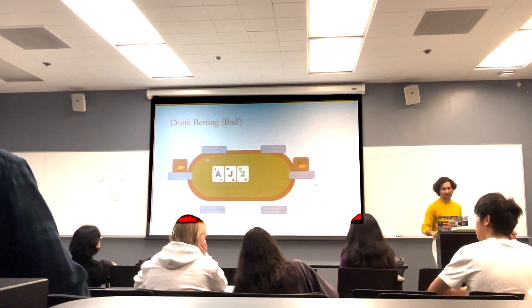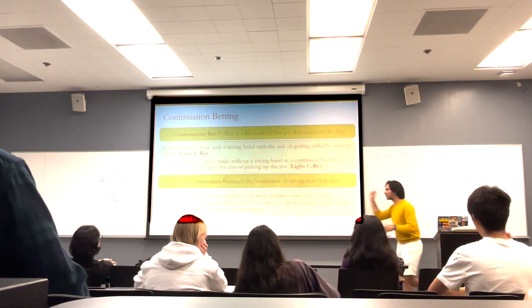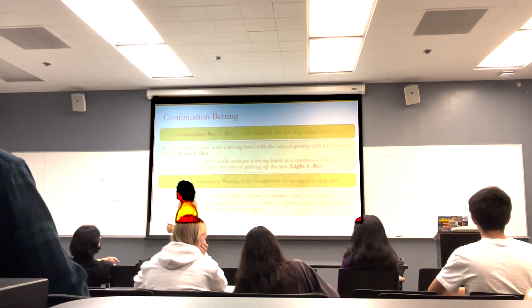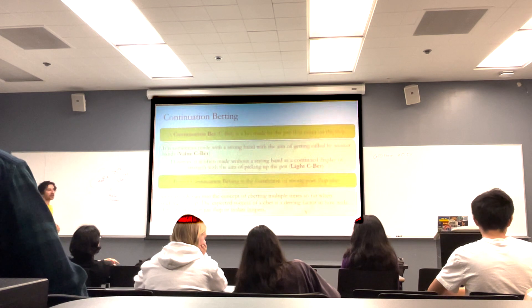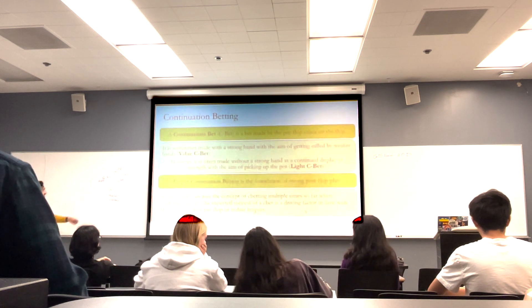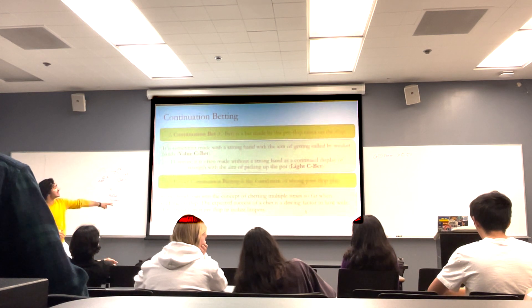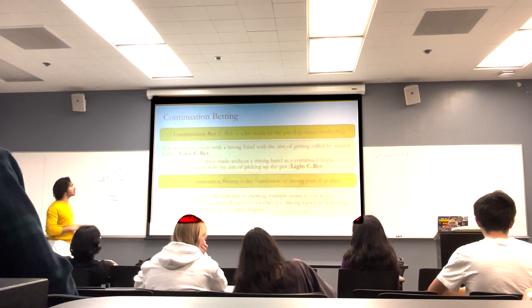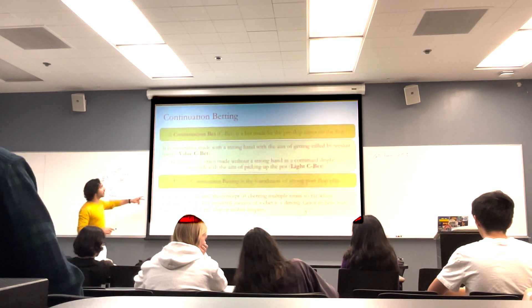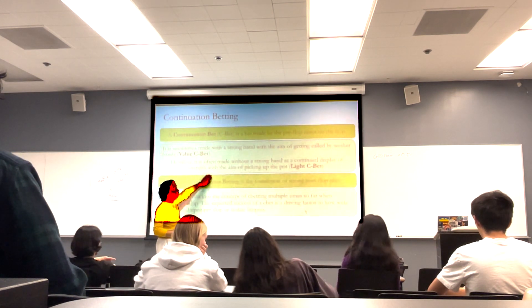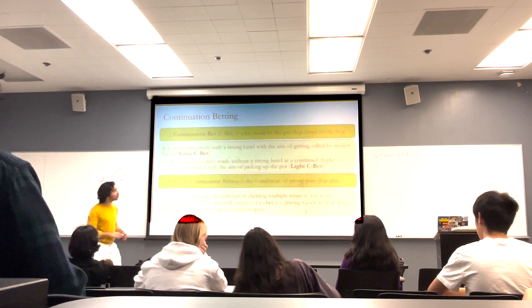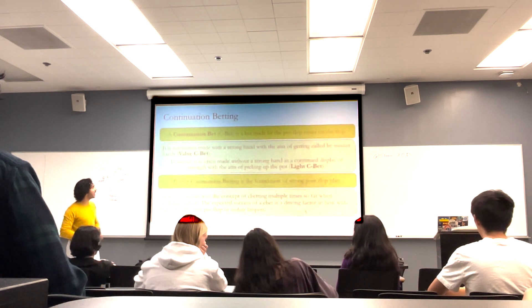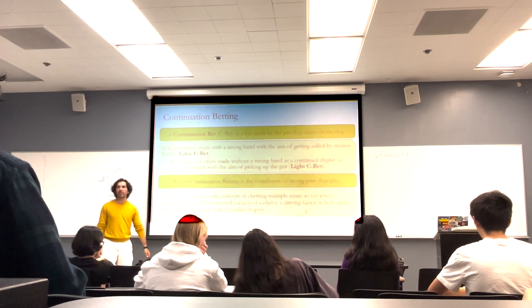What about the preflop aggressor? They should either check behind or c-bet. A c-bet is made by this preflop aggressor and falls into one of two categories: a value c-bet or a light c-bet. A value c-bet is when someone has a strong hand and they think they're going to get called by weaker hands.